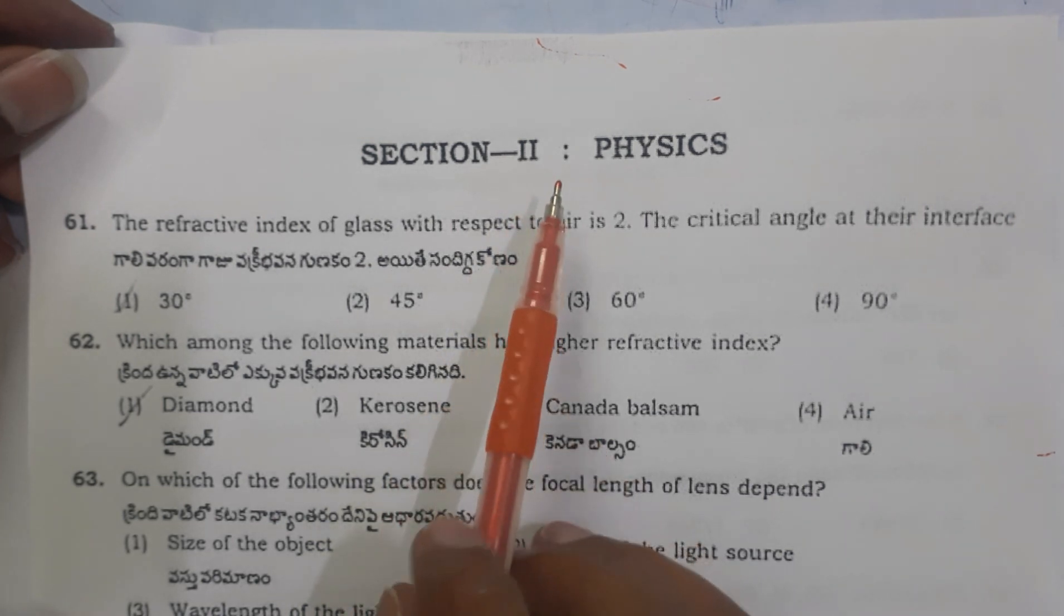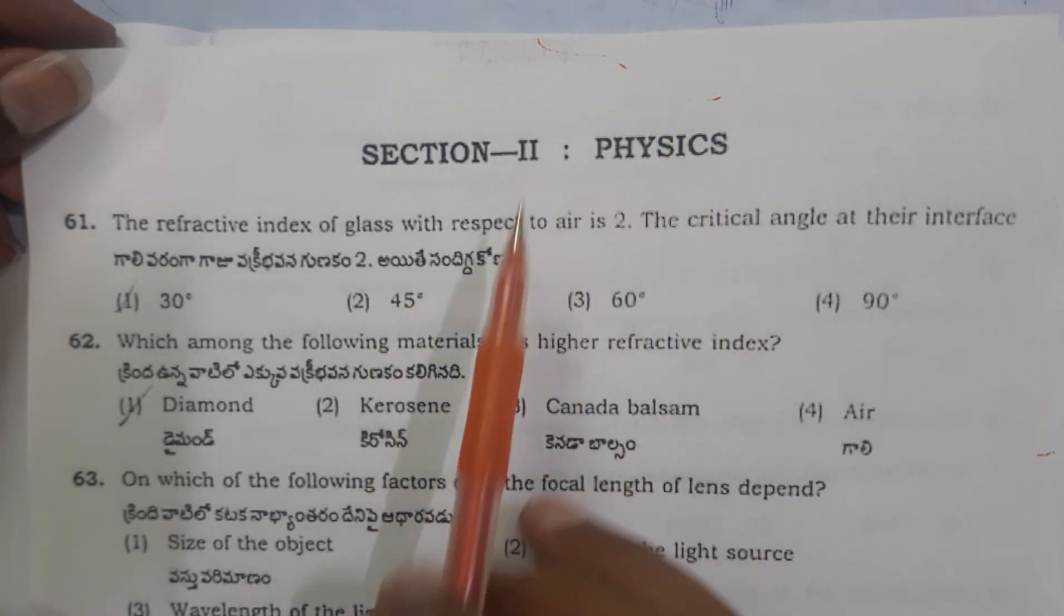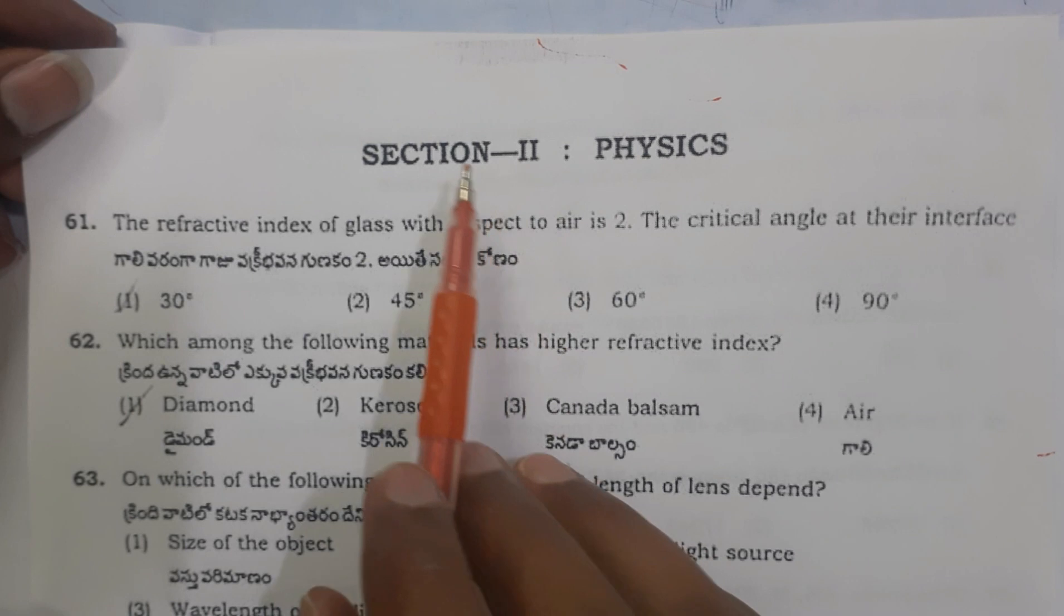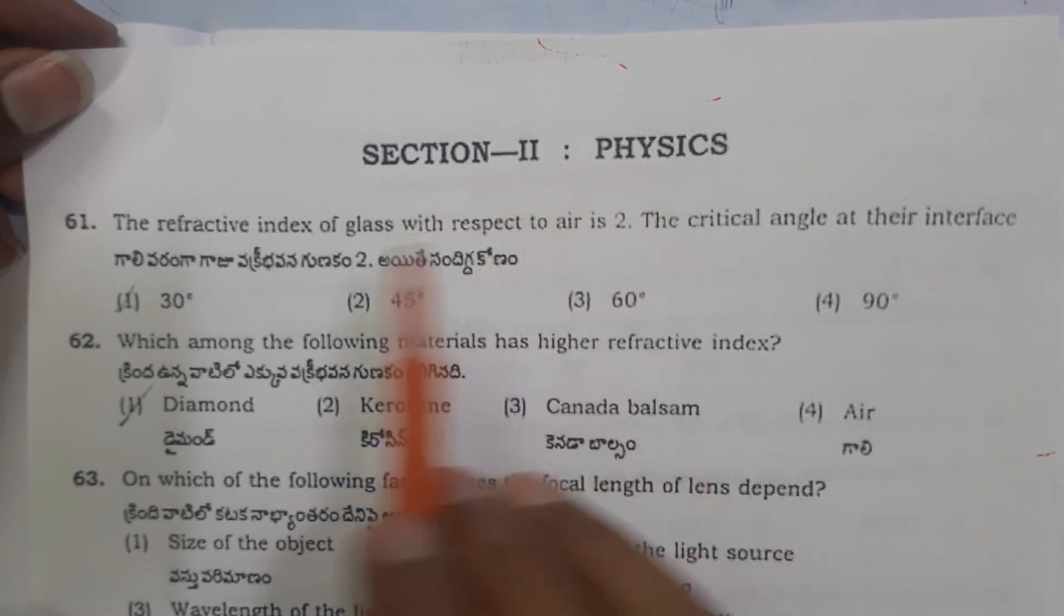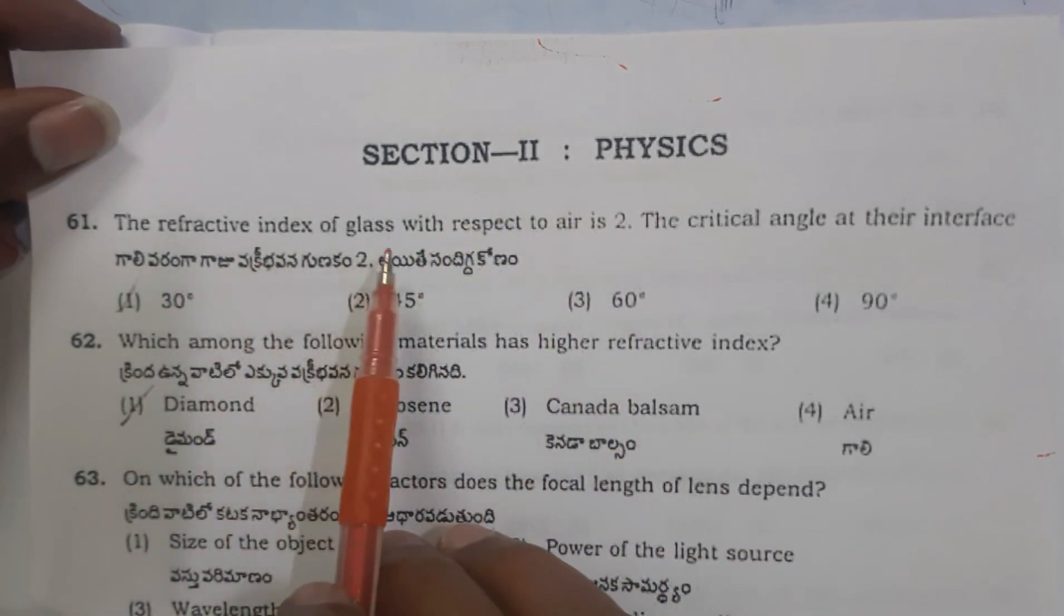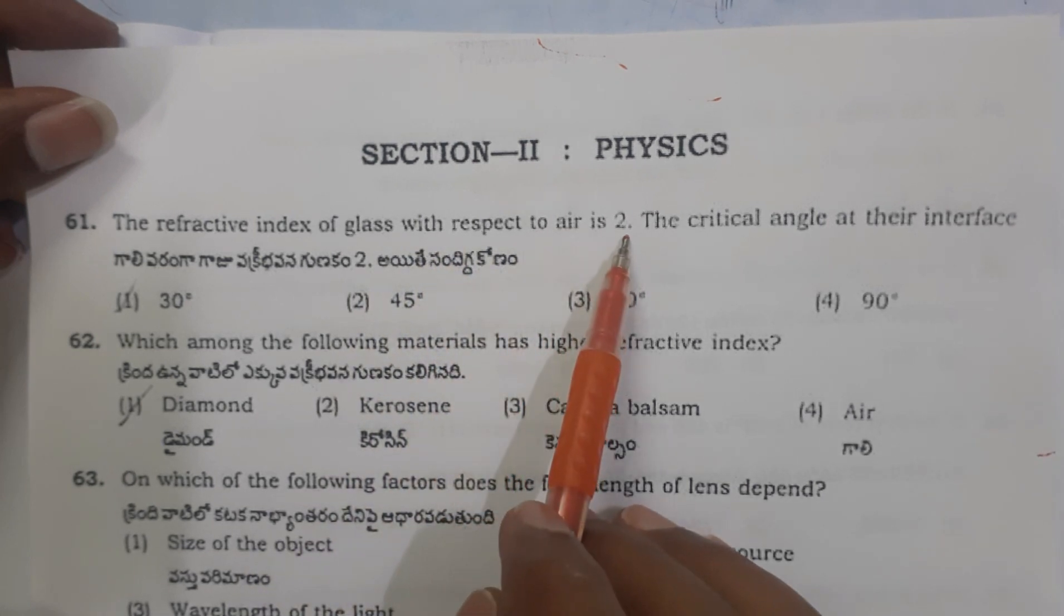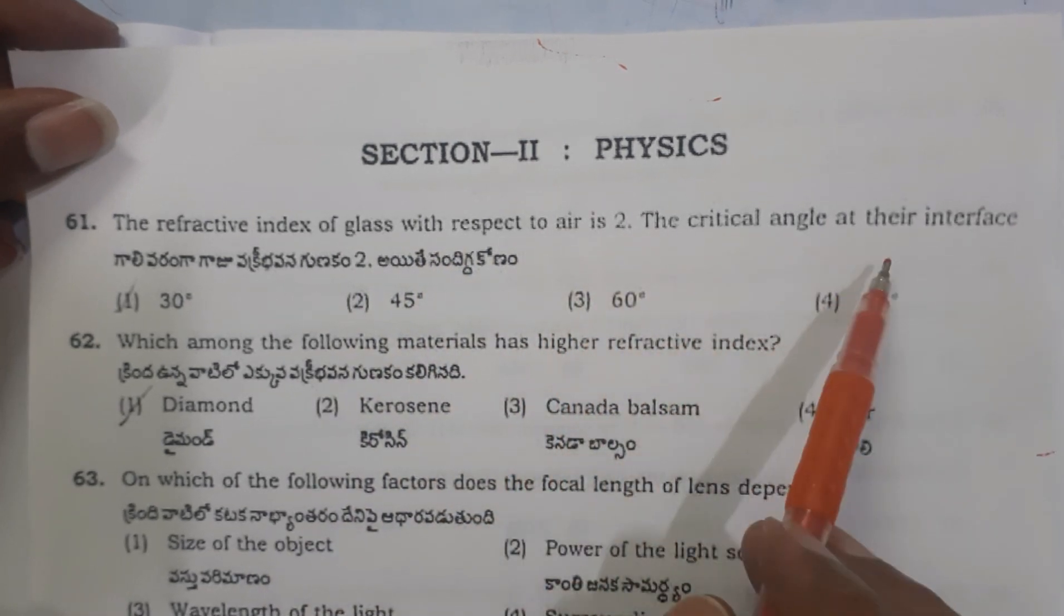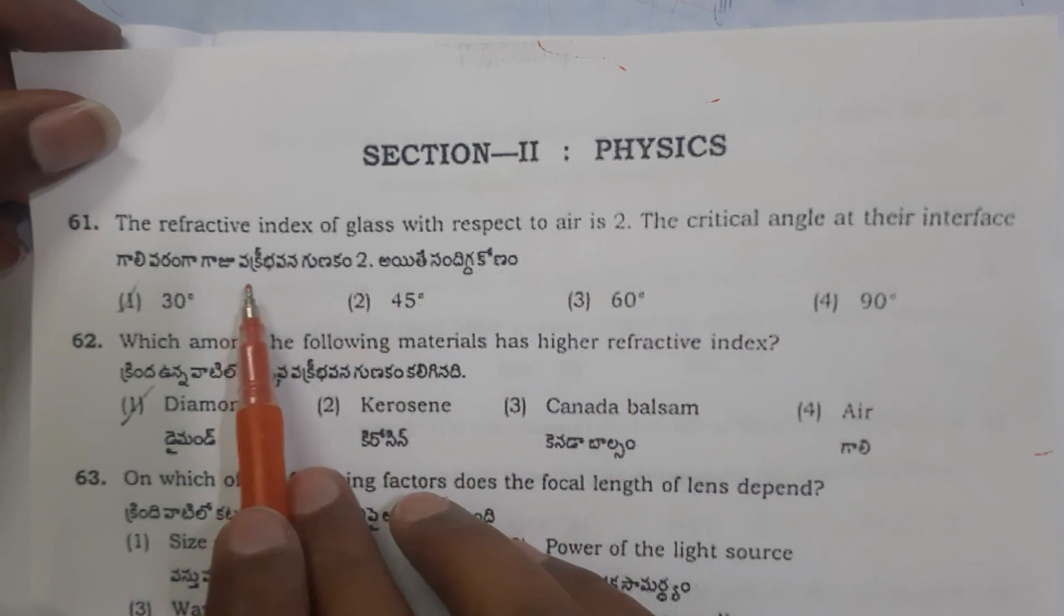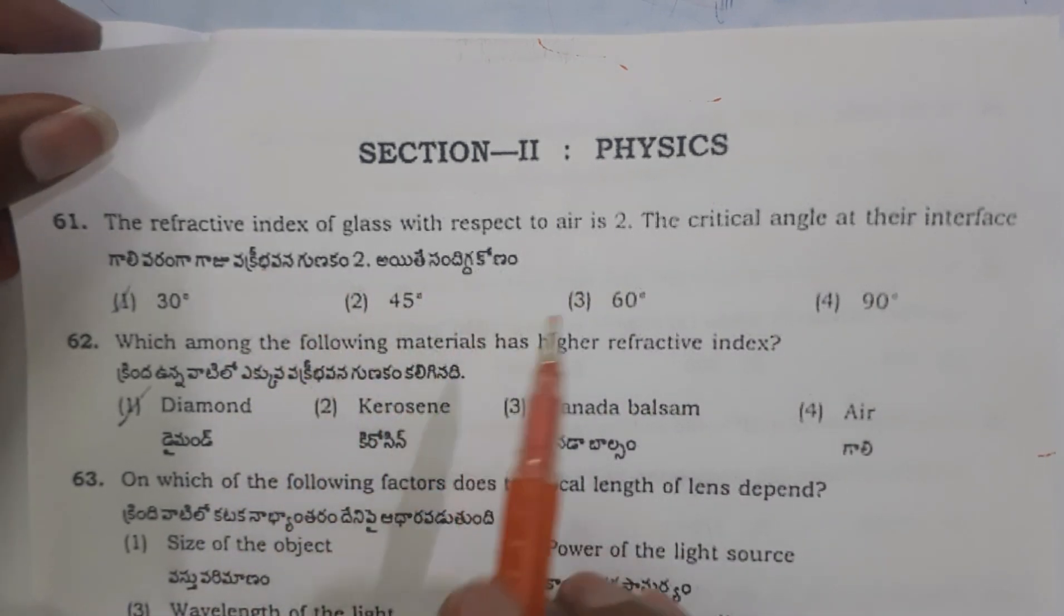In the 2019 Polycet examination, this is the question paper of section 2 physics part. Question 61: The refractive index of glass with respect to air is 2. What is the critical angle at their interface?